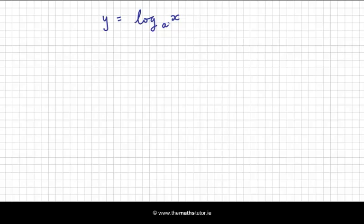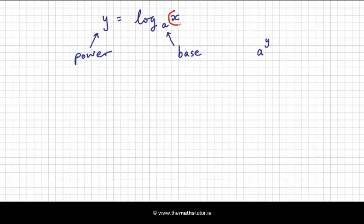I'm going to use base 2. So remember, this base here is the number that's raised to a power — this is our base. So for example, you have a to the power of y. This is the power over here. So we have a base, we have a power, and then this bit up here, the x bit, is actually the result. When you raise a to the power of y, we get x. So let's look at this with some numbers in there.